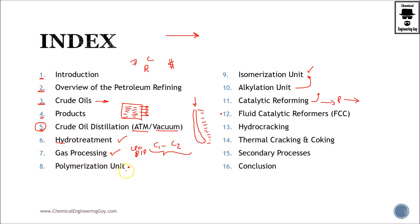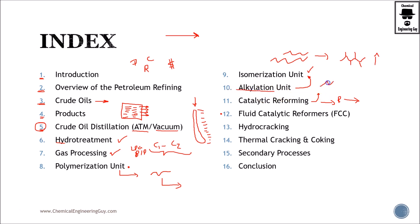Then we go to the polymerization unit, which as the name implies produces polymer gasoline. The isomerization unit isomerizes less-interesting alkanes or paraffins into more interesting isomers for gasoline, which increases the octane rating. The alkylation unit, as the name implies, increases the quality of its outlet stream, which is then added to the gasoline blending pool.